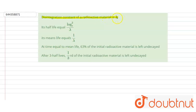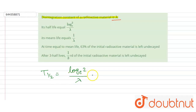The disintegration constant lambda is given. The first option states its half life equals log base e of 2 divided by lambda. We know that the half life equals ln2 divided by lambda, which is equal to 0.693 divided by lambda. So the first option is correct.